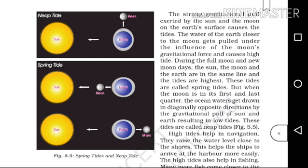During the full moon and the new moon days, the moon, sun, and earth are in the same line and the tides are highest. These tides are called spring tides.